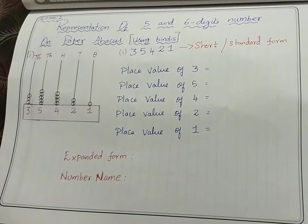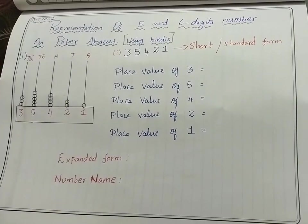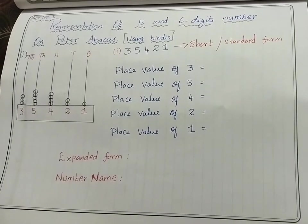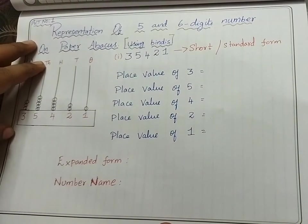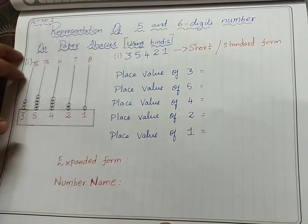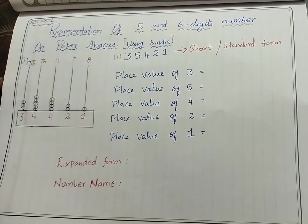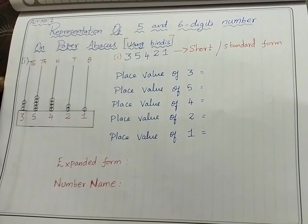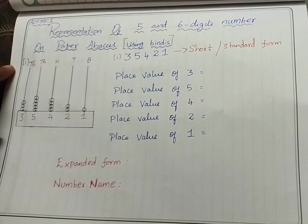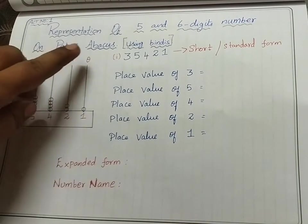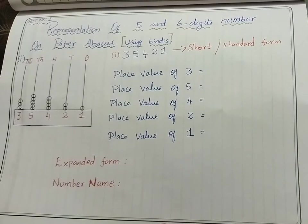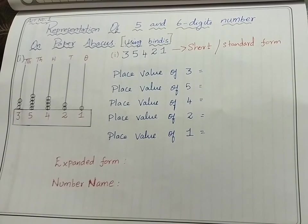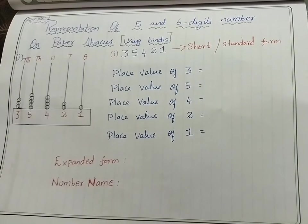Hi, hello children, welcome to the class. Today we are going to do activity number one: representation of five and six digit numbers on paper abacus using bindi. We are going to do the abacus activity here.